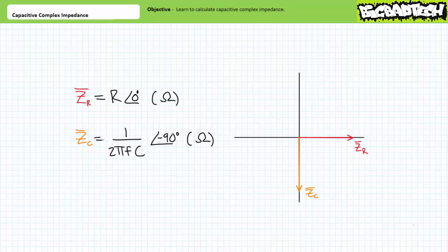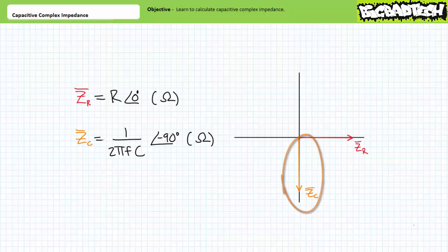Capacitors, in contrast, when represented as complex impedances, are elements that exist entirely in the negative vertical imaginary y-axis. Frequency of the AC source does have effect on the magnitude of capacitive impedance using the following formula. Z of C — note the overbar — equals one over two pi times the frequency in units of hertz, times the capacitance in units of farads, at an angle of negative 90 degrees when represented using polar format. When depicted in the impedance domain, capacitors exist solely on the negative imaginary vertical y-axis, proportional to 1/(2πfC). We'll examine capacitive complex impedance in detail in today's lecture.